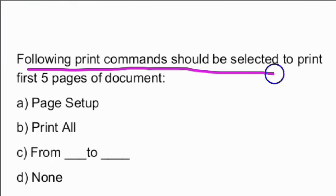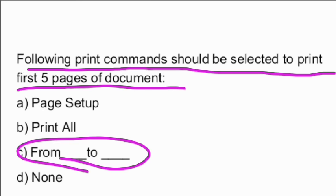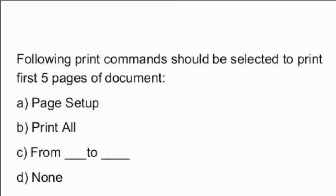Next question: which print command should be selected to print the first five pages of a document? In the print option, you can specify from which page to which page to print. Option C is the right answer — you select from a specific page to a specific page to print only those pages.